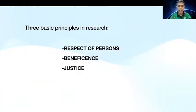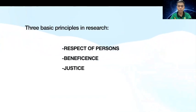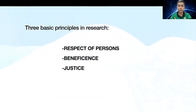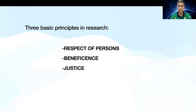There are actually three basic principles — among those generally accepted in our cultural tradition — that are particularly relevant to the ethics of research involving human subjects. We have here the principles of respect for persons, beneficence, and justice. These principles are considered to be universal, meaning they apply everywhere in the world. These principles do not have national, cultural, legal, or economic boundaries. Everyone involved in human research studies should understand and follow these principles.